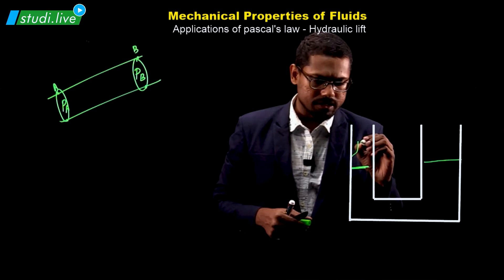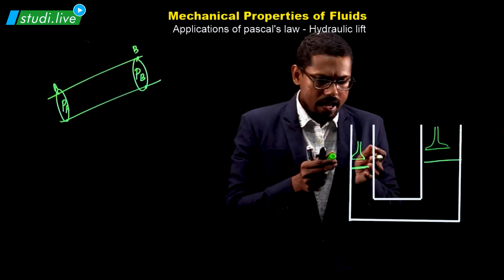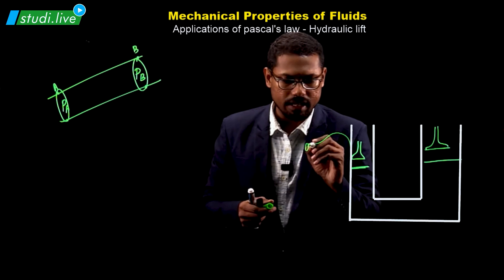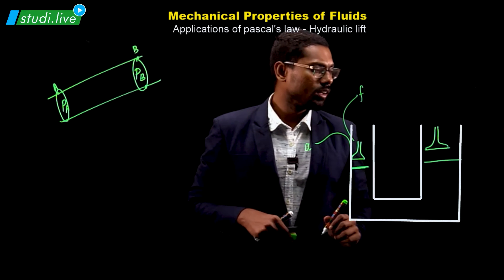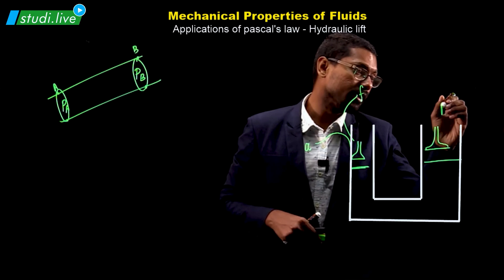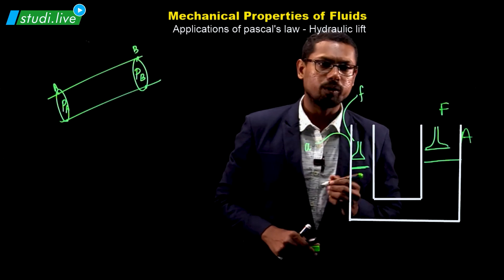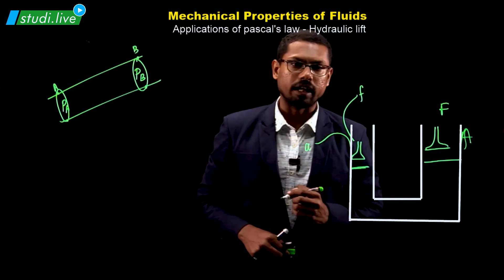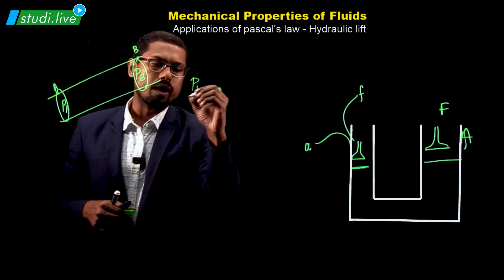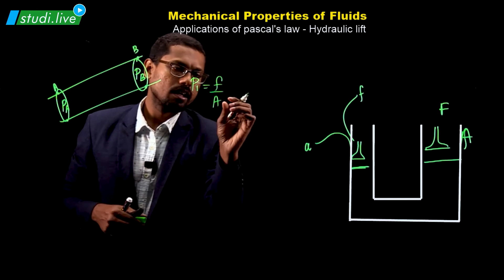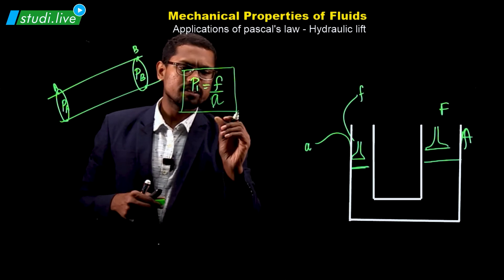We use a piston — a device used to apply pressure. On the thinner arm, the area is small, so we label it small 'a', and the applied force is small 'f'. On the larger arm, the force is capital 'F' — to express that it is larger — and the area is capital 'A'. Now let's calculate: the pressure for the first arm is P1 = f divided by a.